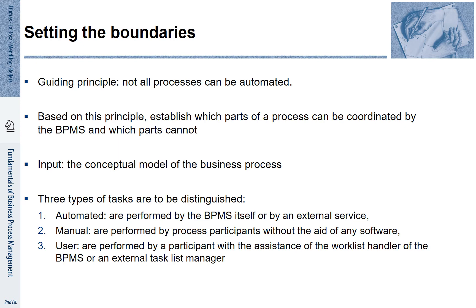Our starting point is usually a conceptual model that we have created during process discovery or during process redesign. The activities of that process need to be more specifically distinguished. For making them executable, we need to identify three different types of tasks. Category 1 is automated: these are tasks that are performed by the BPMS itself or by an external service without any human intervening.